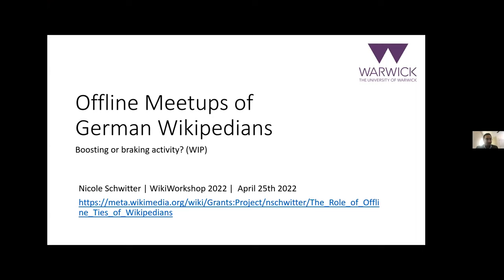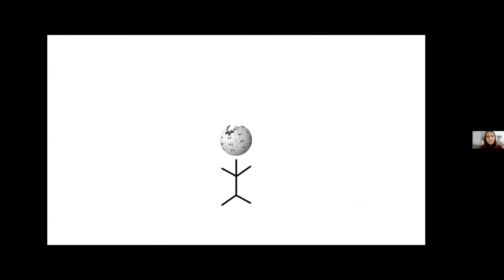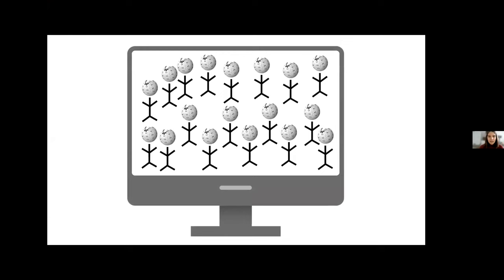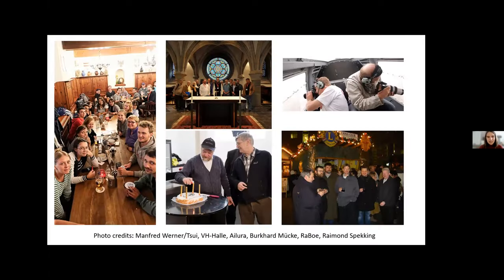We move on to the next presentation by Nicole Schwitter, titled 'Offline Meetups of German Wikipedians: Boosting or Breaking Activity.' Thanks for the introduction. What I'm presenting today is part of my PhD thesis, still a work in progress. In my PhD I research Wikipedia, particularly focusing on the people behind it — the people who collaborate together to write this online encyclopedia. I focus more on the offline side: whenever Wikipedians go out in the real world, put on their t-shirts, and meet face to face, we get a face behind the username.